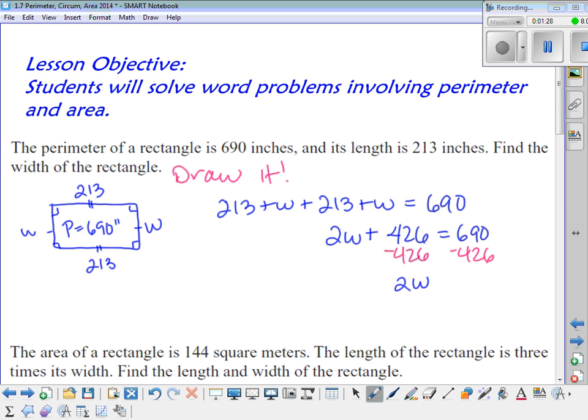Subtract the 426 from both sides. And you get the 2W is equal to 264, and then you divide by 2, and you get that the width is equal to 132 inches. And that would be your answer.